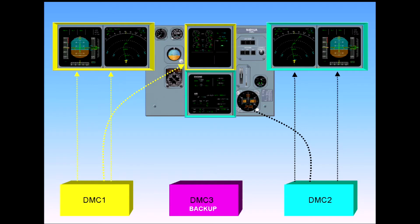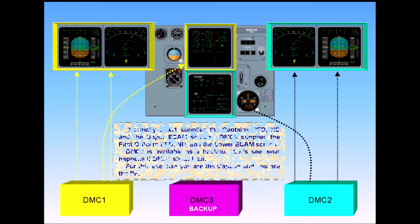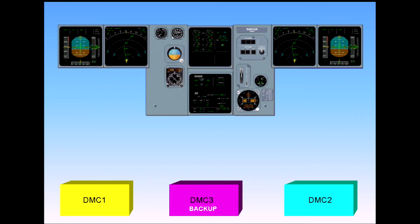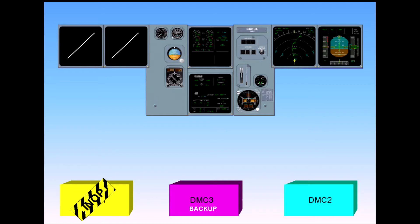Let's see what happens if DMC-1 should fail. For this exercise, you are the captain and you are the pilot flying. When DMC-1 fails, the captain's PFD and ND are lost, along with the upper ECAM screen.